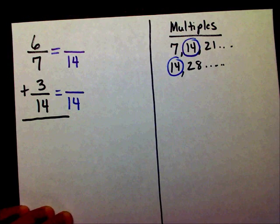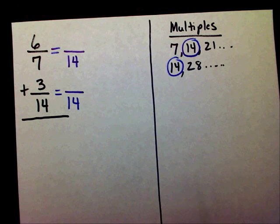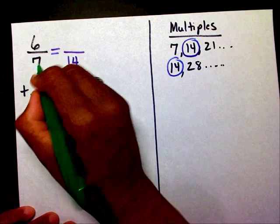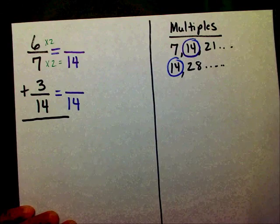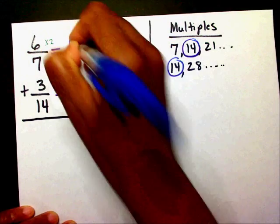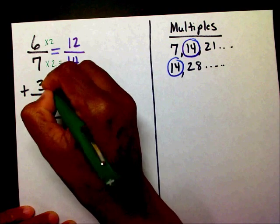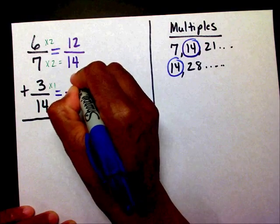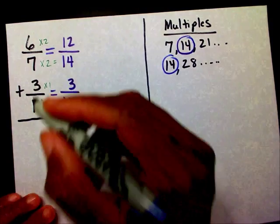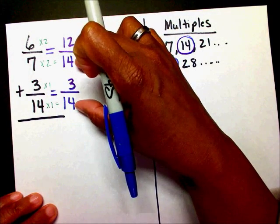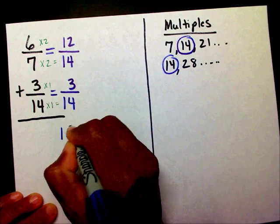Now I need to find my new numerator. I know that 7 times 2 is 14, and I know that 6 times 2 is 12. I know that 14 times 1 is 14, and 3 times 1 is 3. Now that I have a common denominator, I'm going to add 12 plus 3 — 12 plus 3 is 15. And I'm going to bring down my new denominator, 14.